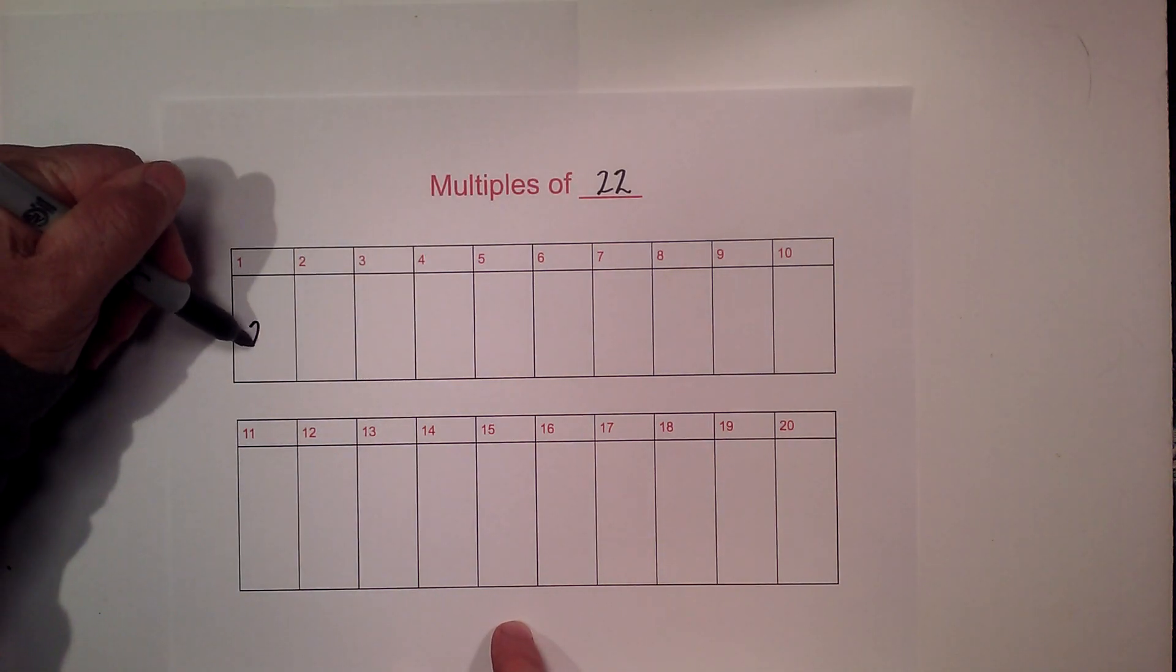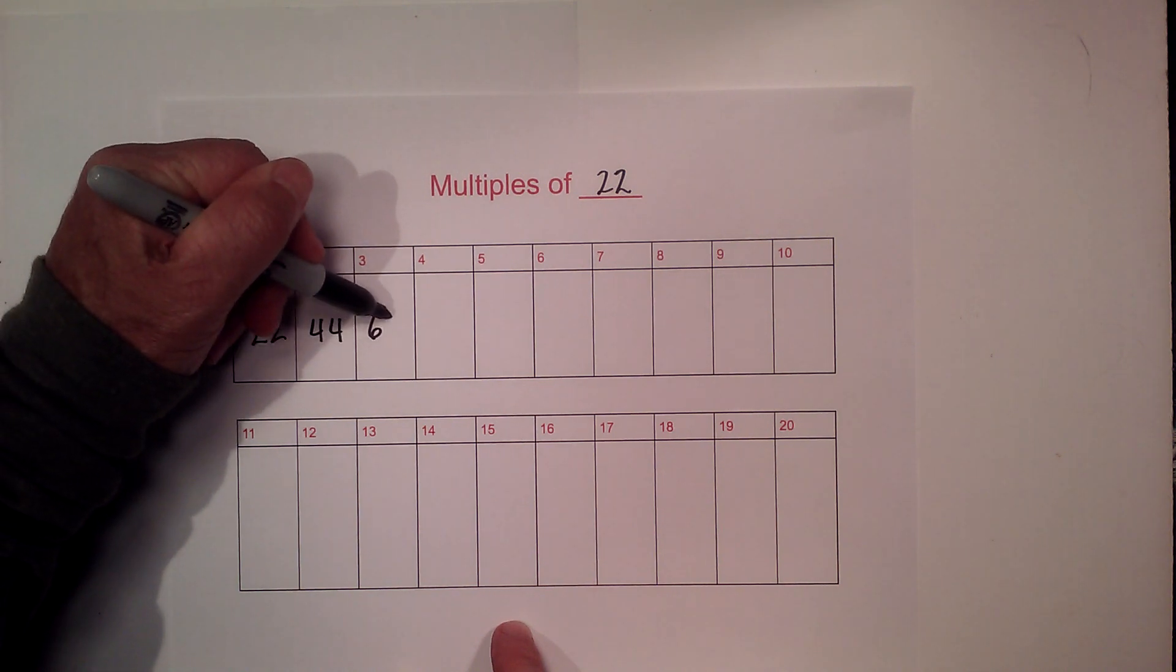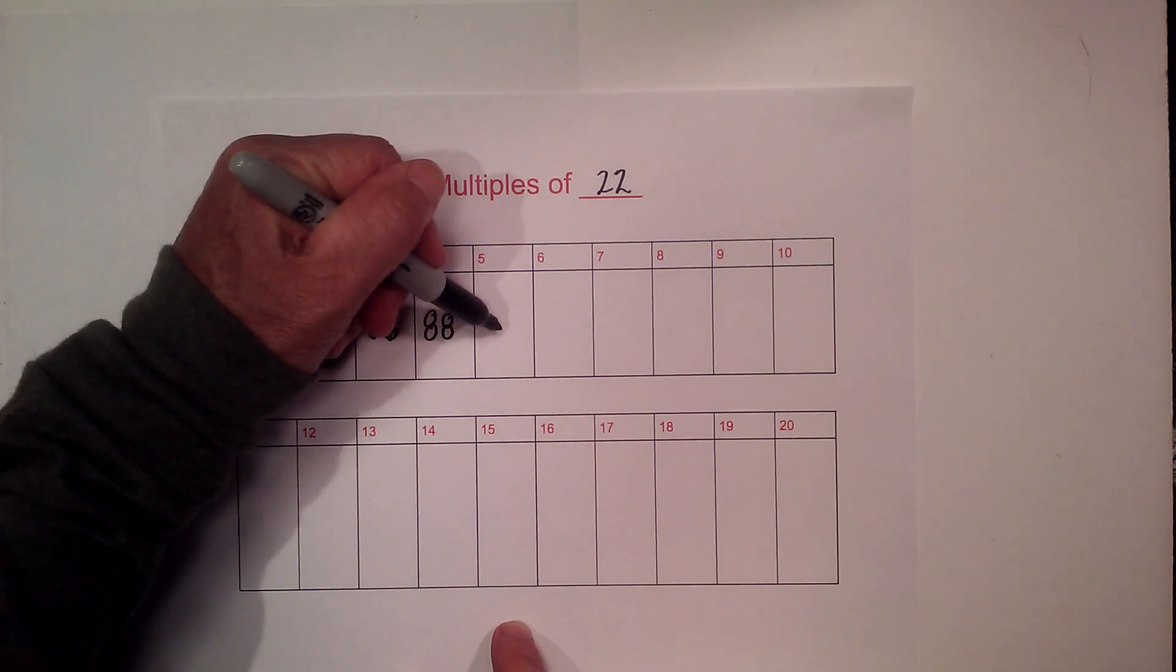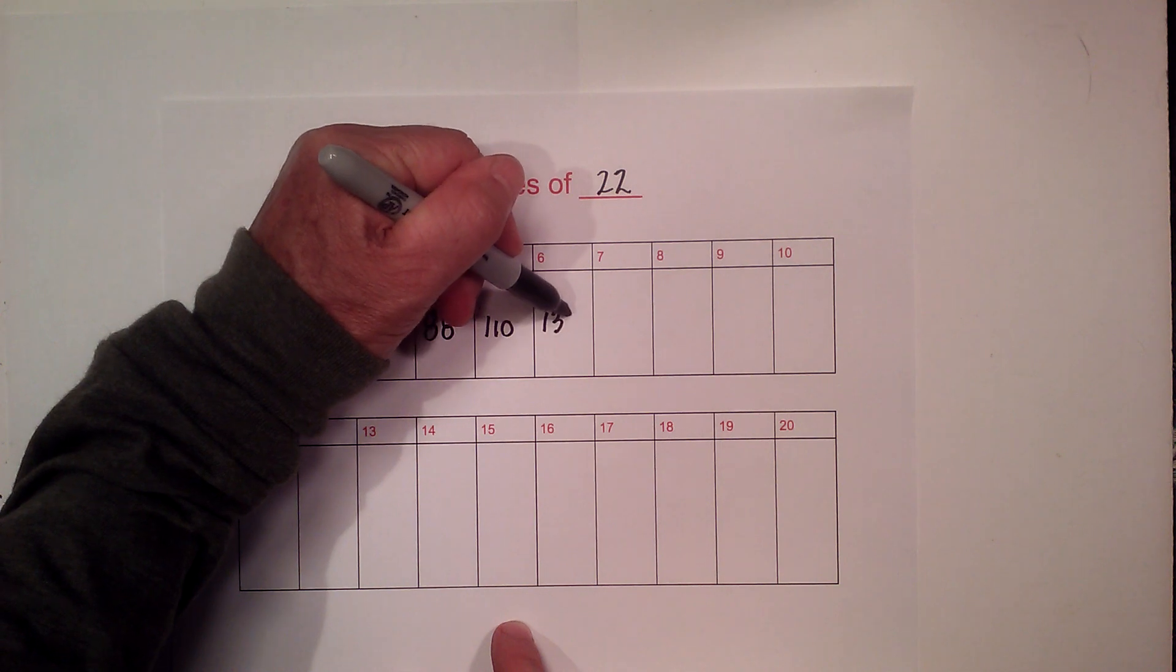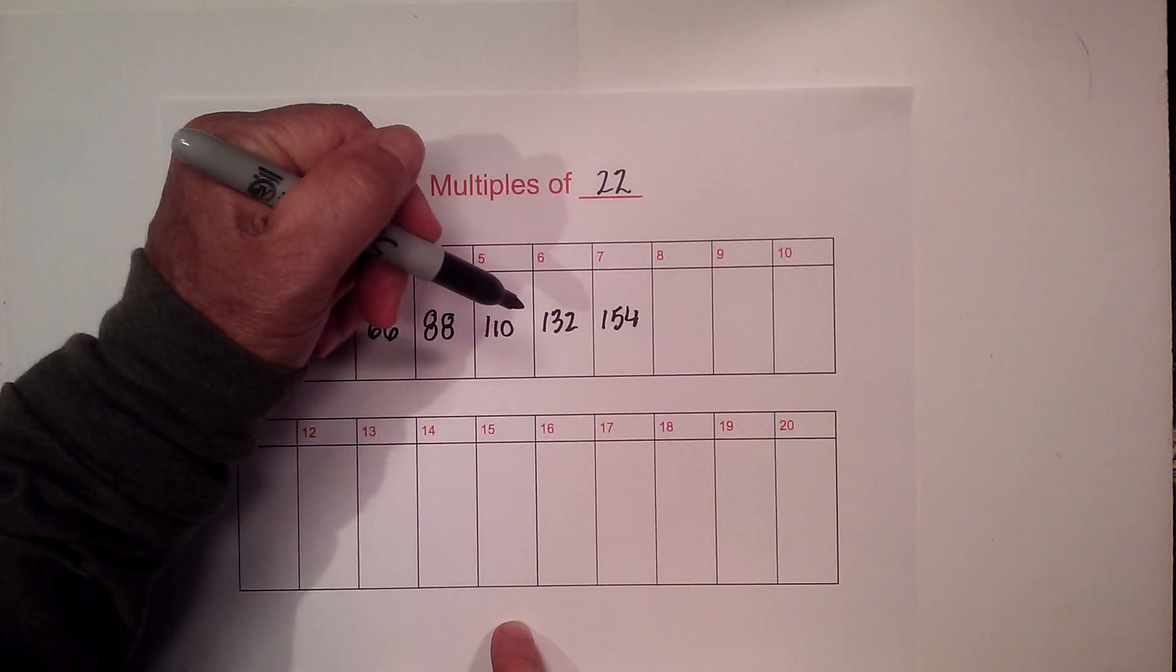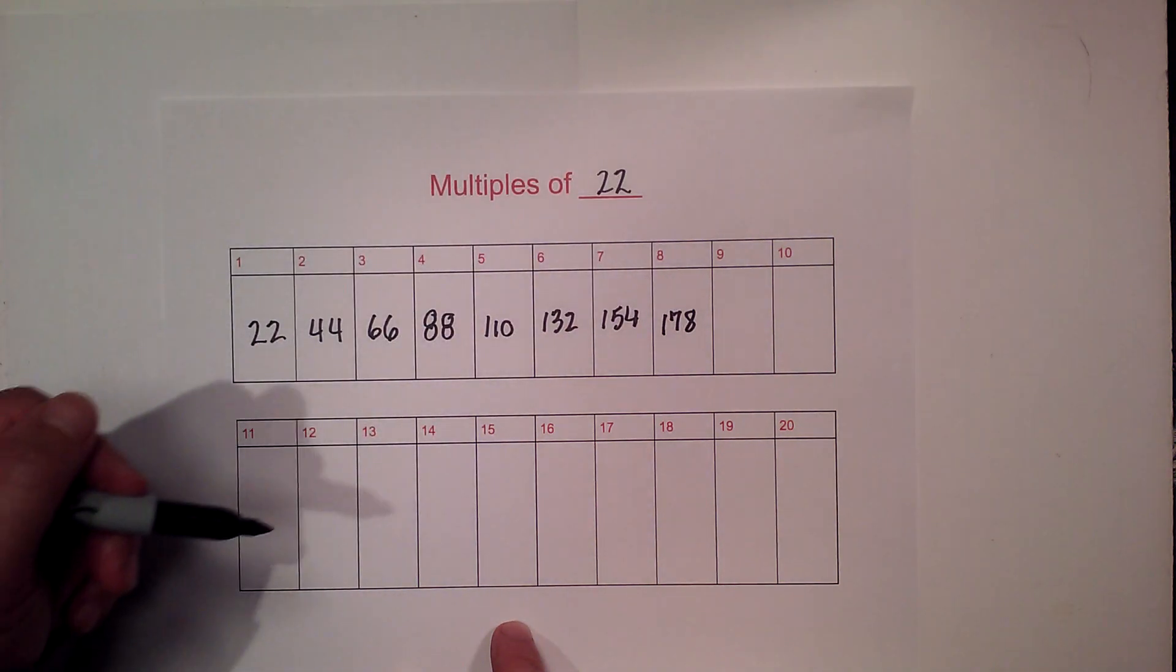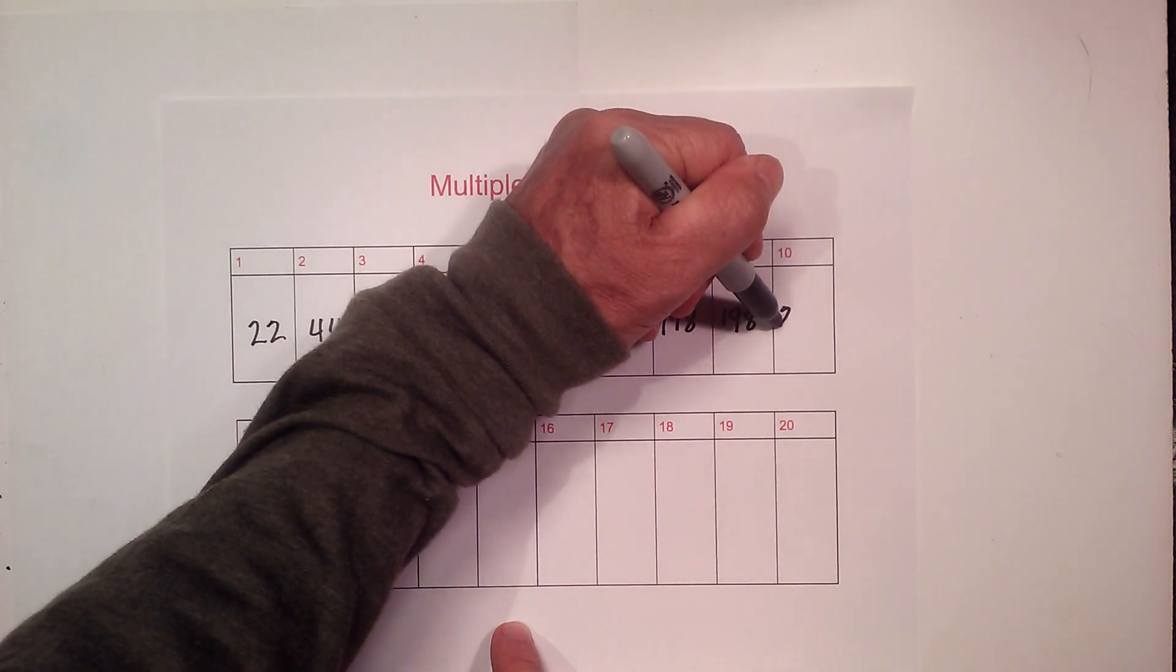We have 22, 44, 66, 88, 110, 132, 154, 178. 22 times 9 is 198 and then 220.